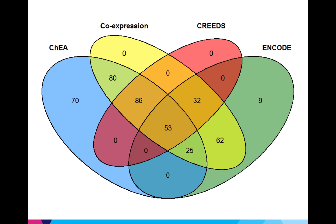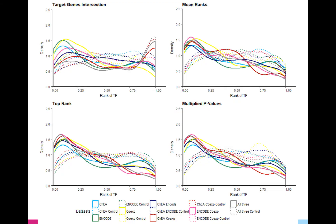So we tested the methods and library combinations again, this time only on Creeds experiments associated with the 53 transcription factors found in all four datasets. The results differ. This time, the combination of the ENCODE and co-expression libraries performs the best. The top rank and multiplied p-value methods still outperform the others, but by a lesser margin.